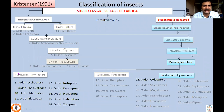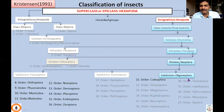We completed previously the discussions on subdivision Polyneoptera — various orders were covered — as well as Paraneoptera. Now we are talking about subdivision Oligoneoptera, which consists of insects with complete metamorphosis. That means insects with four stages: egg, larvae, pupae, adult. Larvae may be caterpillar, grub, or maggot.